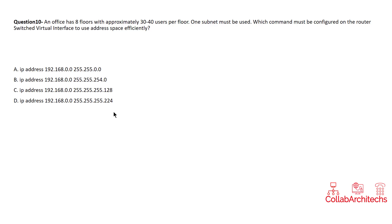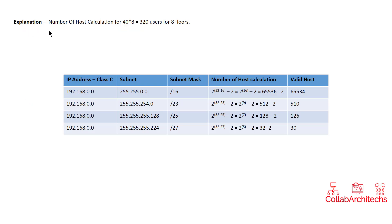Let's see how to calculate the number of hosts from an IP address and subnet mask. This is a Class C IP address which is common across all options, but the subnet mask is changing. Based on the subnet mask, we need to first find the prefix size. For example, 255.255.0.0 gives us slash 16, since it has two 8-bit octets set.